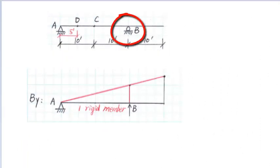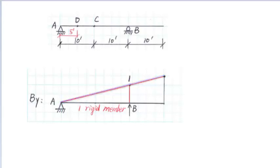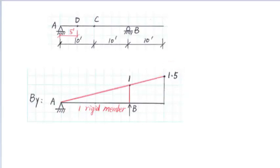Next, we will draw the influence line of the vertical reaction By at the roller support. In order to get the influence line of the reaction By, we need to remove the roller support at B and let the beam AB move upward at support B. The upward displacement at B is 1. According to similar triangles, we can get the value at the beam right end is 1.5. Note that the reaction on the influence line has no unit.